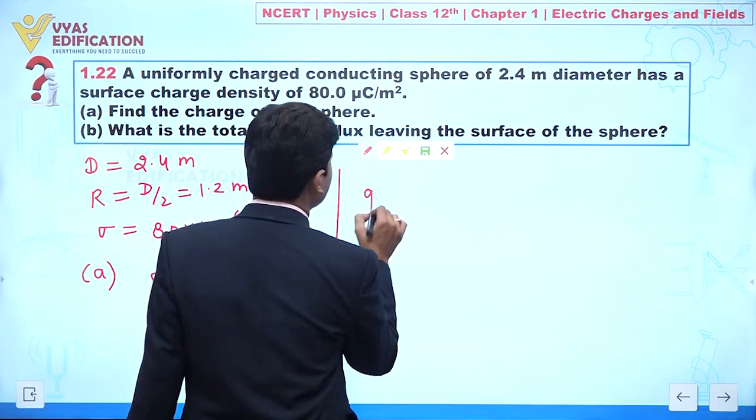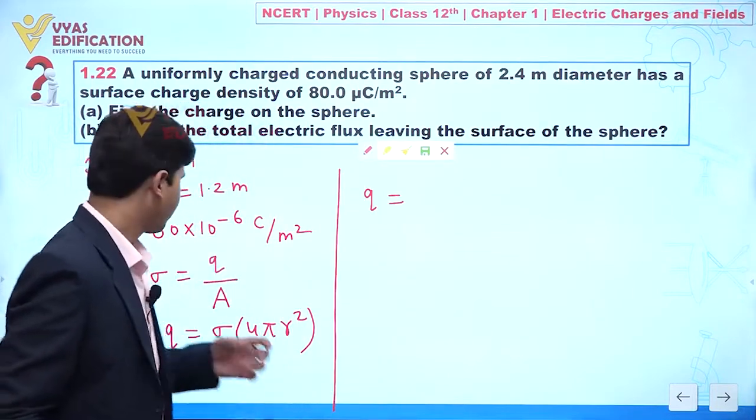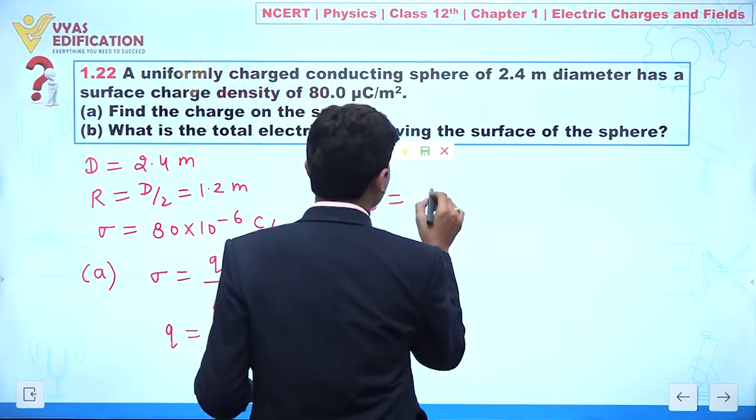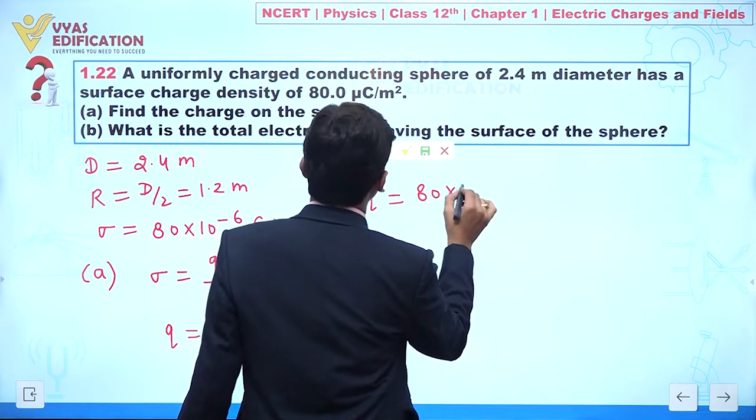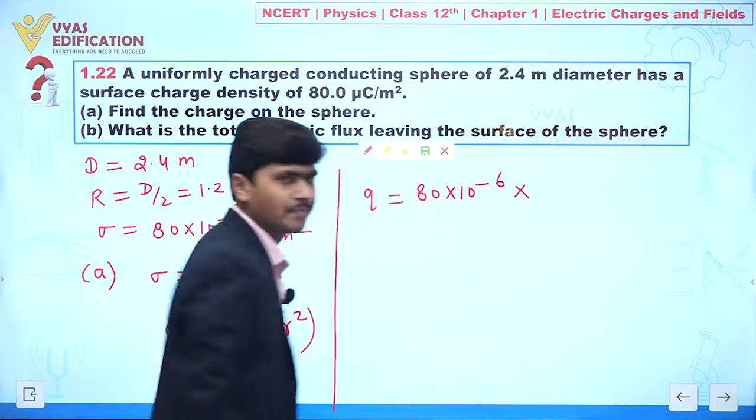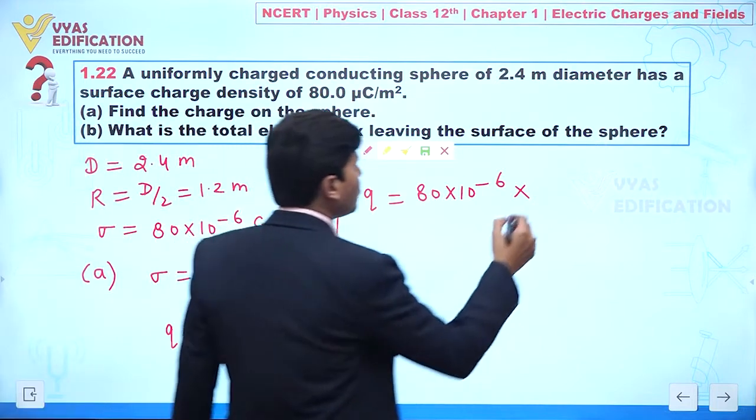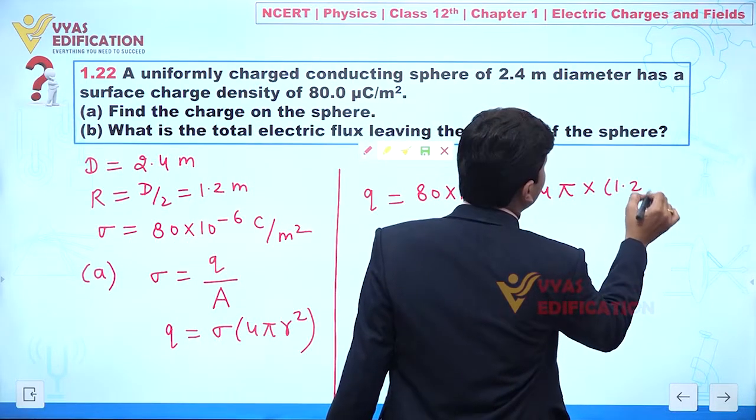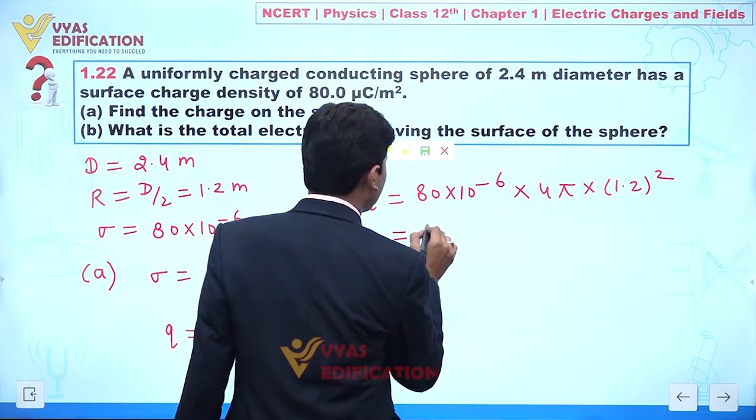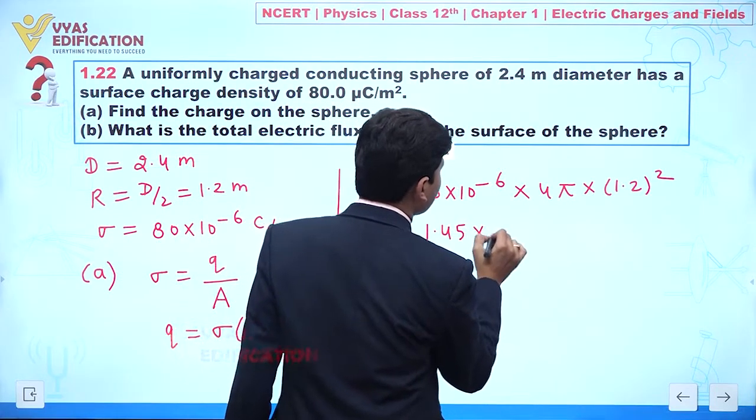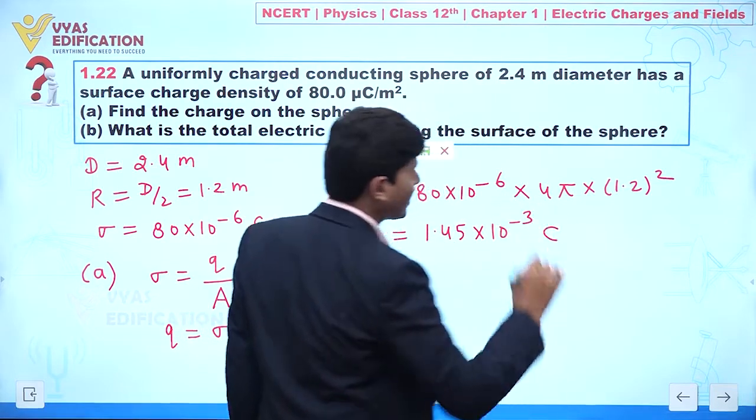Now if we put all the values, we can write like this - q, this is equal to sigma, value of sigma we have 80 into 10 to the power minus 6, multiply it with 4 pi and this is 1.2 whole square. So if you solve it, you will find 1.45 into 10 to the power minus 3 coulomb.